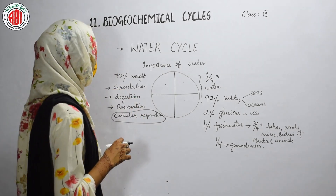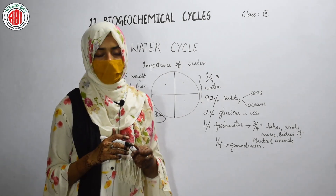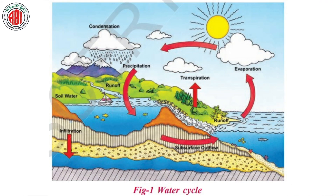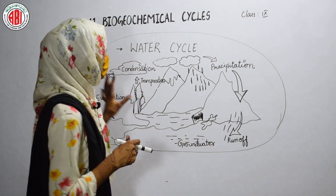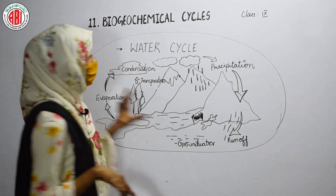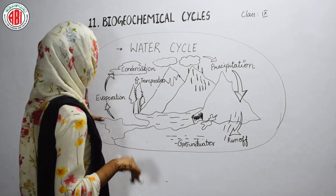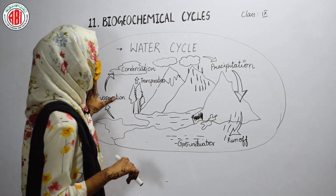Now let us study about the water cycle. The water cycle is a cyclic process in which water evaporates from the land into the atmosphere and then comes back to the earth's surface. This whole cyclic process of evaporation, condensation, and water returning to the surface is called the water cycle. The steps included in the water cycle are: evaporation, condensation, precipitation, and collection of water in different forms.